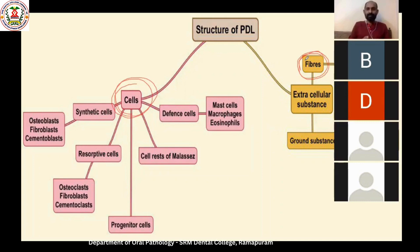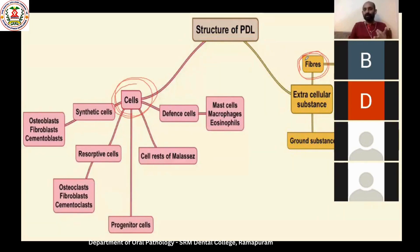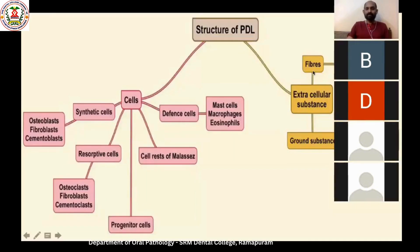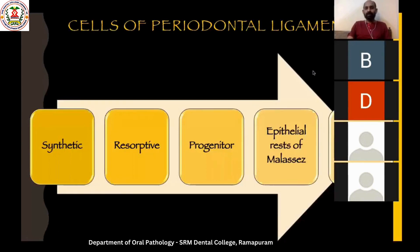Within the periodontal ligament you also have a lot of fibers, because as we said it is a ligament. The function of these fibers is to connect the cementum on one side to the bone on the other side. So the two important components are cells and fibers, invested in an amorphous gel-like matrix called the ground substance.